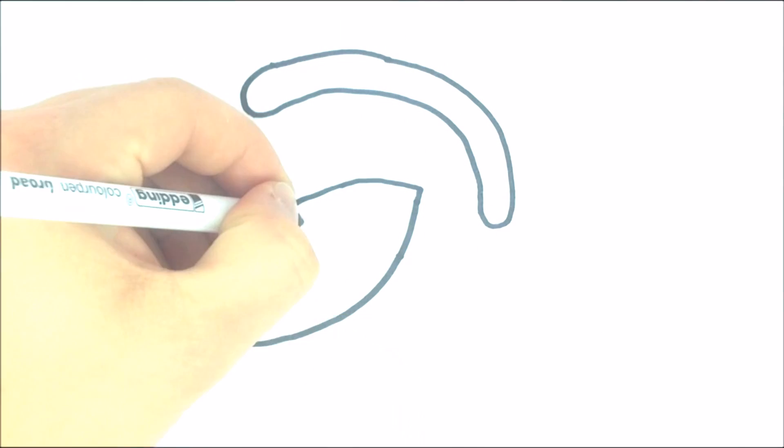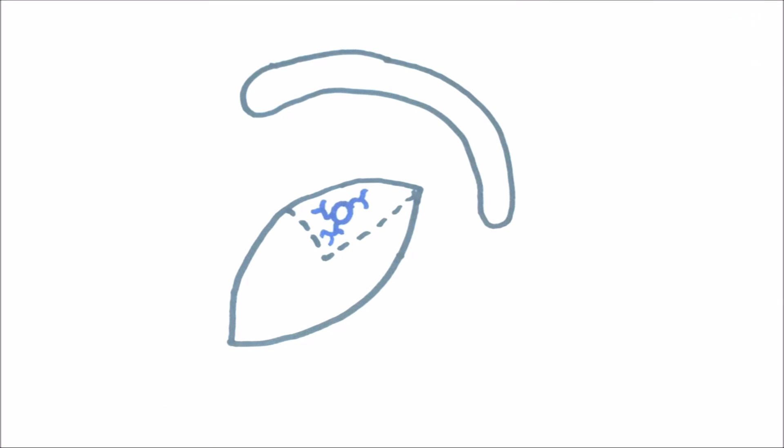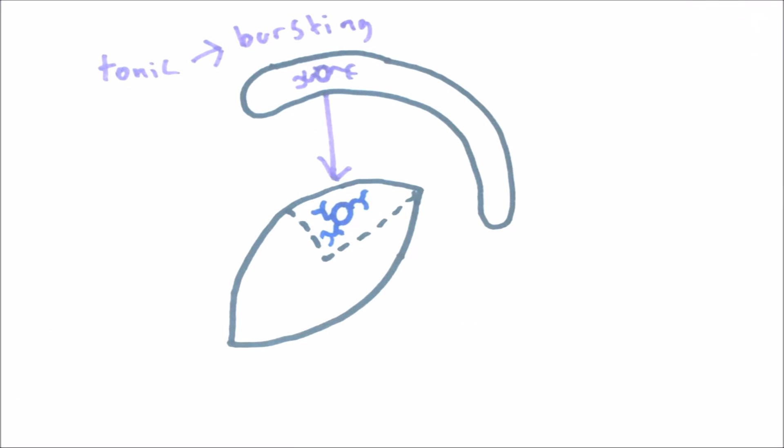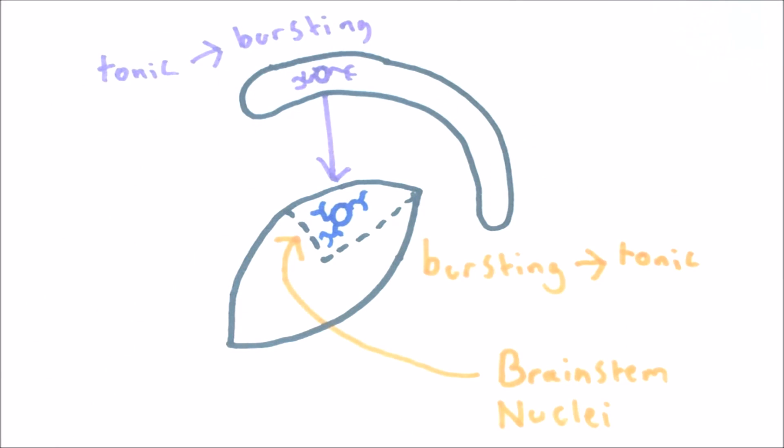The other components of the thalamocortical system connect to switch thalamic relay neurons from one mode of firing to another. The thalamic reticular nucleus provides inhibitory input to thalamic relay cells, hyperpolarizing them and allowing the inactivation gate to open, meaning that they will respond with a burst of action potentials when next stimulated. In contrast, the brain stem modulatory inputs release acetylcholine, which depolarizes the thalamic neurons, closing the inactivation gate so that the neurons will fire in tonic mode when next stimulated.